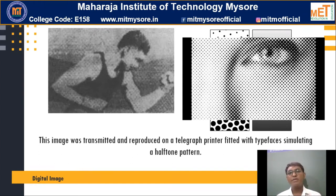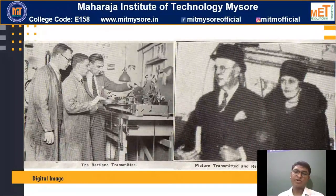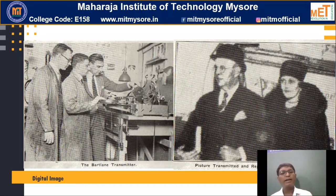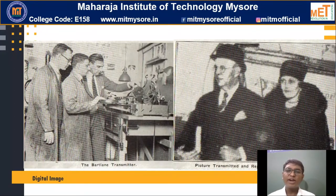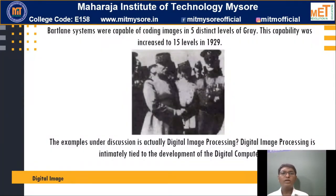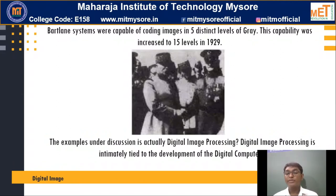In the early 1920s, when the first digital image was formed, it made use of five distinct gray levels. Later, that was improvised and the capability increased to much more levels of gradients. Now have a look at the Bartlein transmission system on the left side — on the right side you are able to see a picture being transmitted and received at the Bartlein transmission system. The Bartlein system was capable of coding images in five distinct levels of gray.